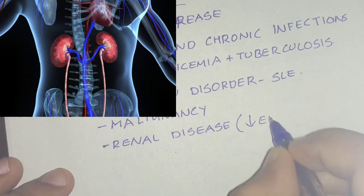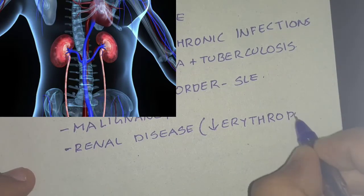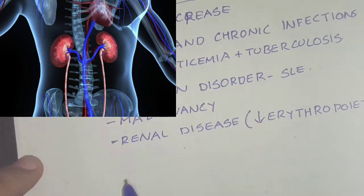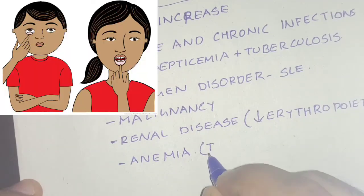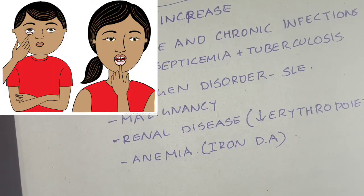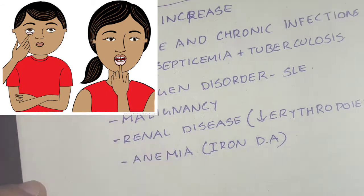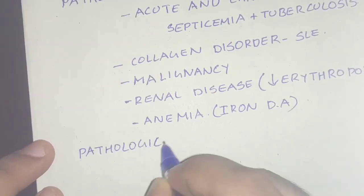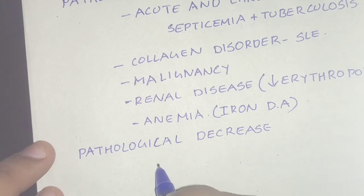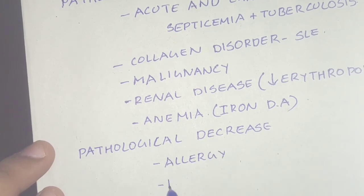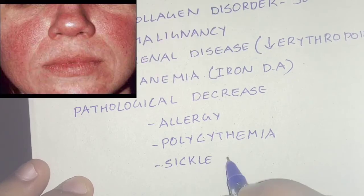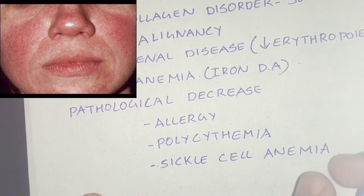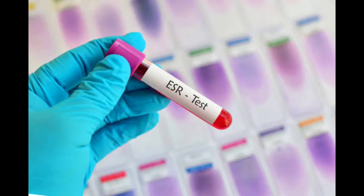In renal disease, decreased erythropoietin secretion leads to decreased erythropoiesis, contributing to increased ESR. In anemia — especially iron deficiency anemia — ESR is increased, but in sickle cell anemia and spherocytic anemia, ESR is decreased due to defective rouleux formation. Pathological decrease is mainly seen in allergy, polycythemia, sickle cell anemia, and spherocytic anemia.